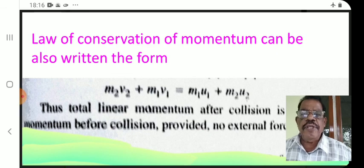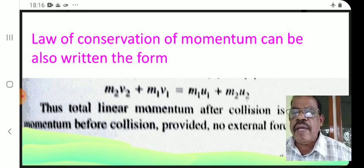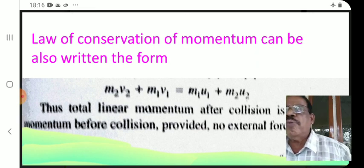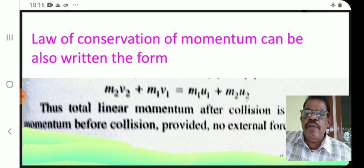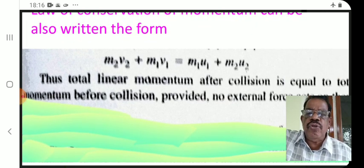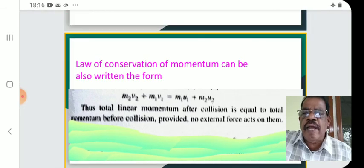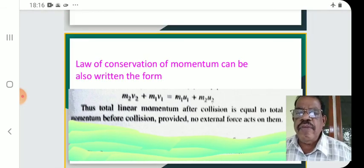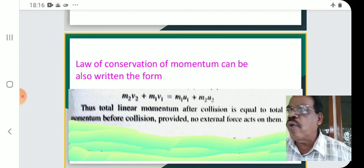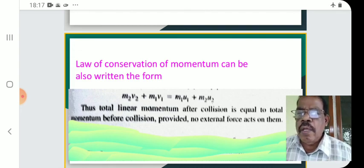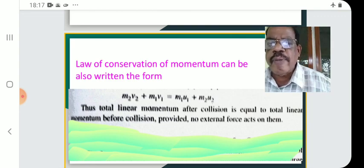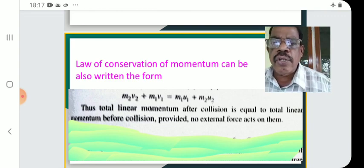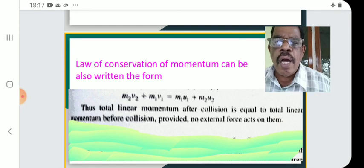The law of conservation of momentum can also be written as M1V1 plus M2V2 equals M1U1 plus M2U2. When two bodies collide, their total momentum after impact equals their total momentum before impact. Total linear momentum after collision equals total linear momentum before collision, provided no external force acts on them.